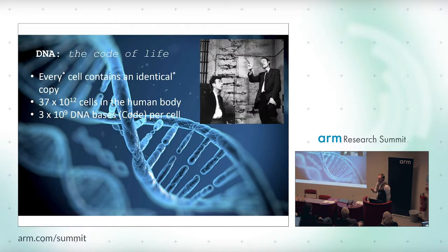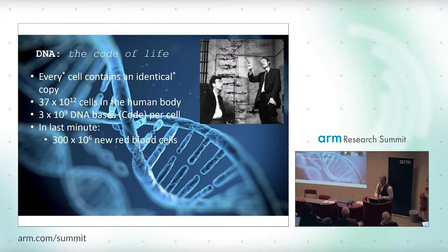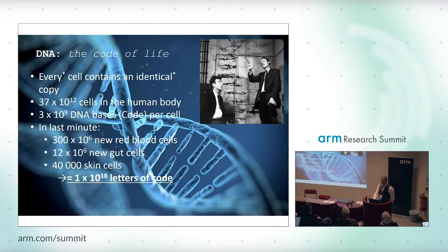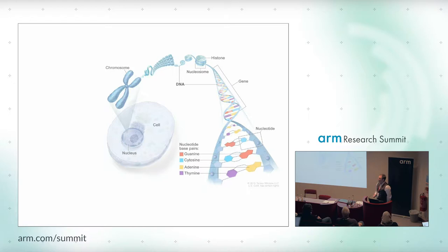Of course, it's not static. It's not a static chemical. It's constantly remoulding, rebuilding, copying itself. Every time one of your cells dies and gets replaced, every time you start to grow or shed off some skin, that DNA is being copied. In the last minute, every single one of you has made 300 million new red blood cells shooting around your body carrying oxygen to your tissues. There are 12 million new gut cells digesting your lunch and 40,000 new skin cells adding to the dust in the room. So that's just to put into context that DNA can be vast, complex, and rapidly remoulding.